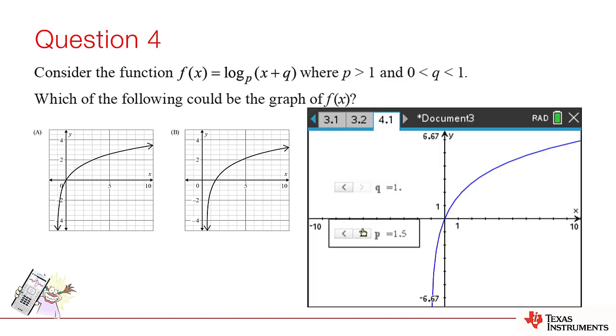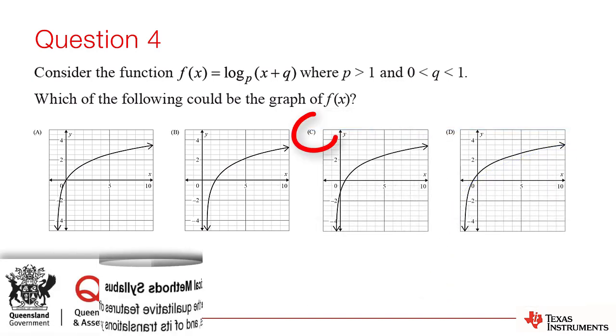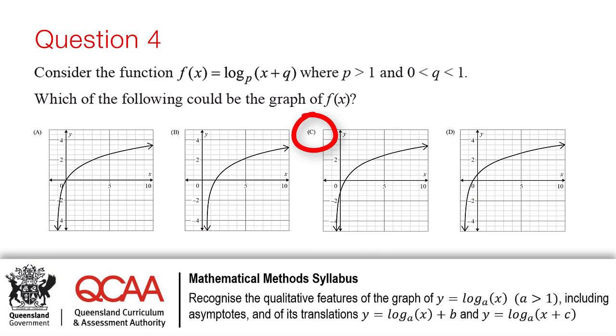In the case of p, we see no change in the x-axis intercept. That's because p is a dilation. Q is a translation. As q only varies between 0 and 1, the graph must cross the x-axis between 0 and 1, but not at 0 or 1. This leaves option C as the only viable result.